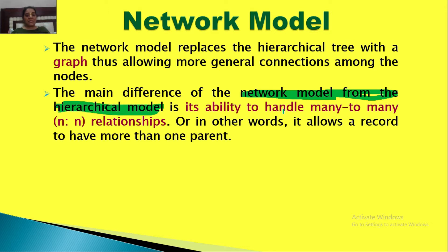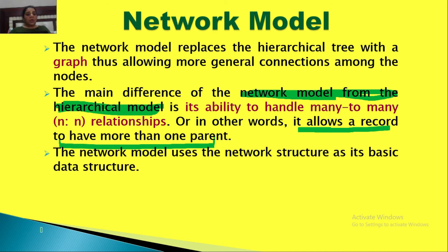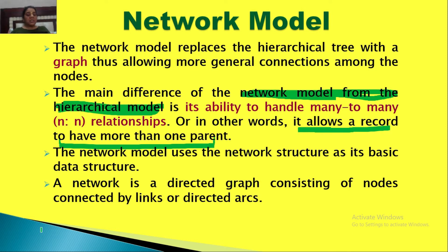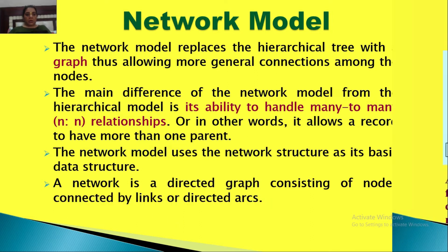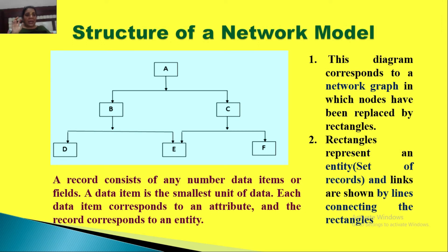The network model has the ability to handle many-to-many relationships between entities. In other words, a record can have more than one parent. The network model uses the network structure as its basic data structure — the data is stored using a network structure, which is a directed graph containing a number of nodes connected through links or directed arcs. We can understand the structure of a network model through a diagram, and we will proceed to an example after this.